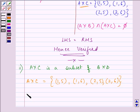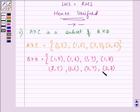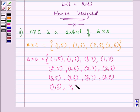Now, we need to find out B × D also. And this will be a little bigger one: (1, 5), (1, 6), (1, 7), (1, 8). Similarly, (2, 5), (2, 6), (2, 7), and (2, 8). Proceeding on, (3, 5), (3, 6), (3, 7), (3, 8), (4, 5), (4, 6), (4, 7), and (4, 8).